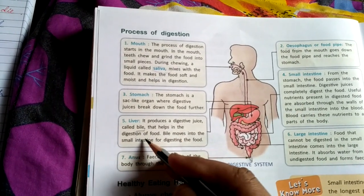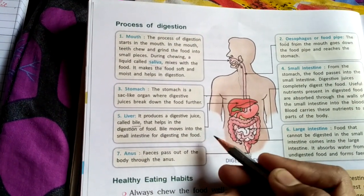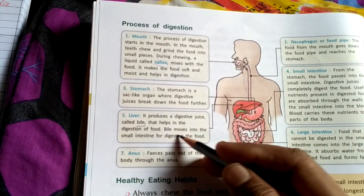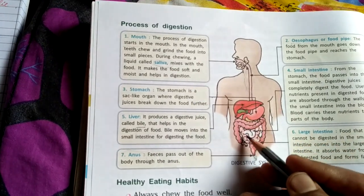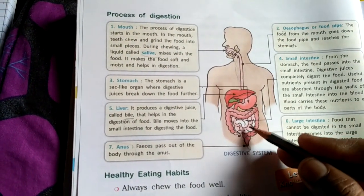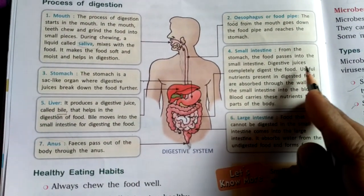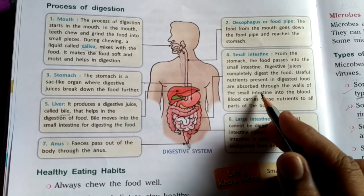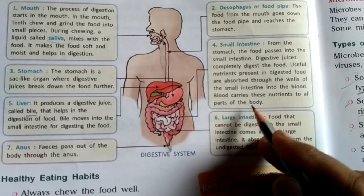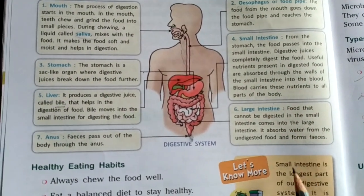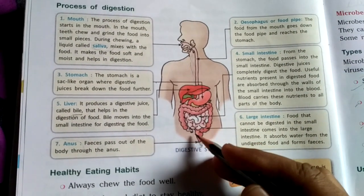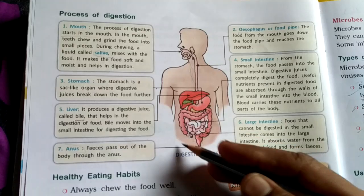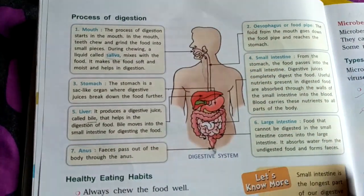The muscular walls of the small intestine secrete digestive juices that break food items into their constituent nutrients. The liver also helps — it produces a digestive juice called bile that moves into the small intestine to help digest the food. The digestive juices completely digest the food, and the useful nutrients in the digested food are absorbed through the walls of the small intestine into the blood, which carries these nutrients to all parts of the body.